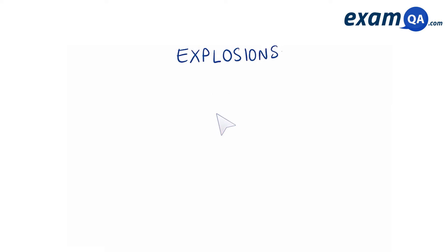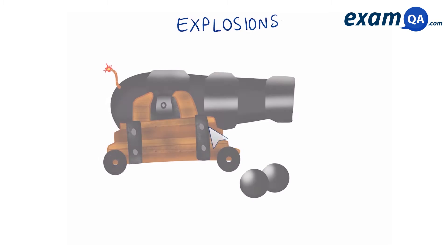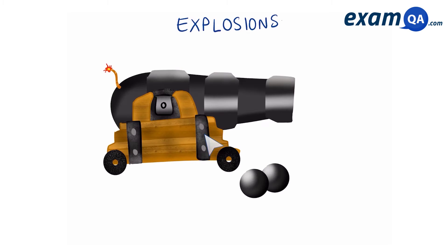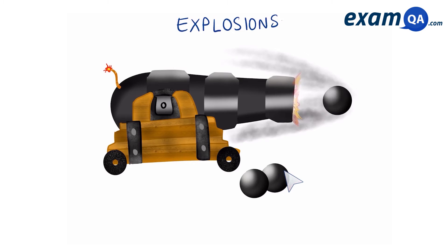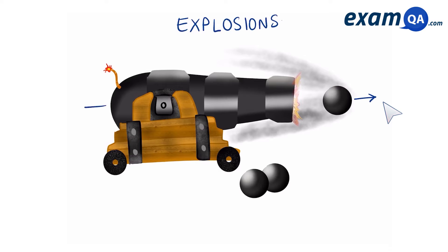Here's another example of a momentum question involving explosions. Over here we have a cannon. Let's load it up with a ball and shoot that ball out of the cannon. You'll see that the ball is going to be moving forward, and when this happens the cannon is going to fly backwards.